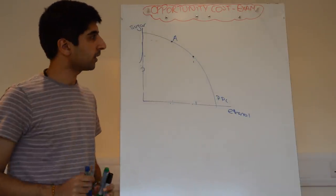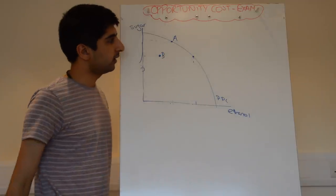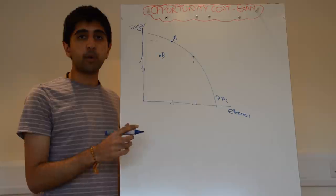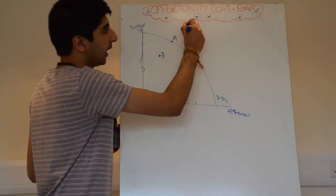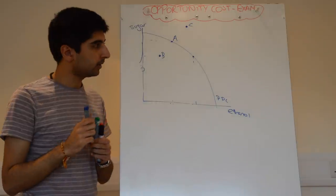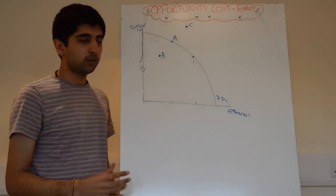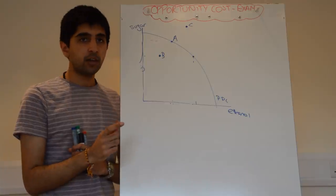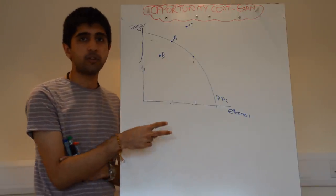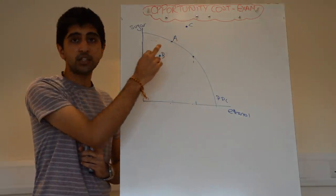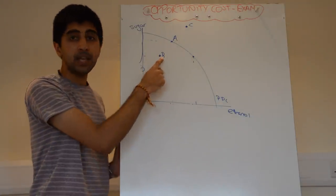So let's say you pick point A — that's a productively efficient point. They might also ask you to show a point that's inefficient, in which case you pick a point inside the curve — call that point B. They might even ask you to demonstrate a point that's unattainable — a point in production that at this point in time is unattainable for the firm — in which case you pick a point outside the PPC, call that point C. You would get one mark for picking the right points. But normally you would get two marks below for explaining why. So let's say the question was: pick a point that's efficient — in which case point A; pick a point that's inefficient — in which case point B. Then they would ask you to explain why these points are efficient and inefficient — two marks for each point labelled on the curve.